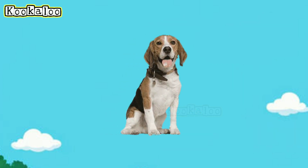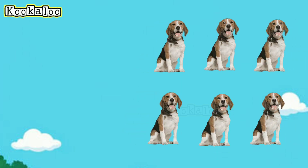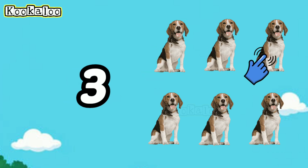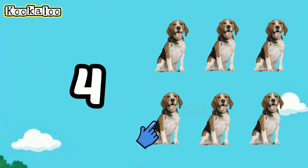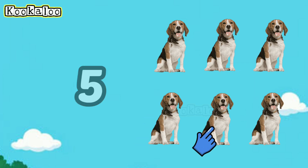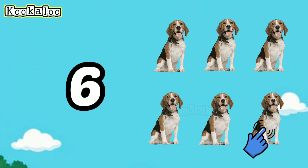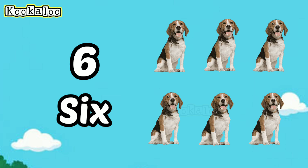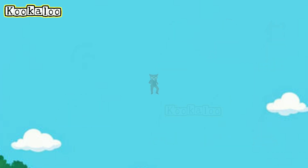What animal is this? It's a dog. Correct! How many dogs can you see? One... Two... Three... Four... Five... Six. There are six dogs. Six dogs. Good job!